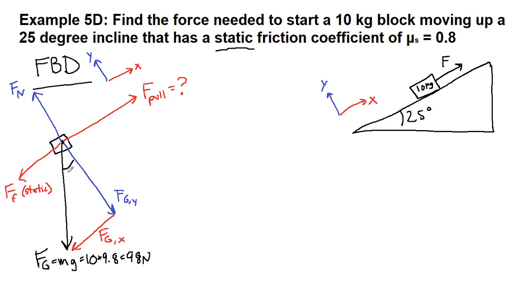As always, when we break gravity into pieces, this 25 degree angle from the ramp goes into that spot. And we have here that this is 98 cosine 25 degrees, and this is 98 sine 25 degrees.